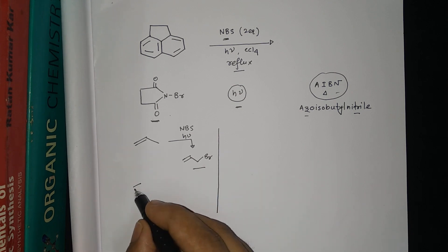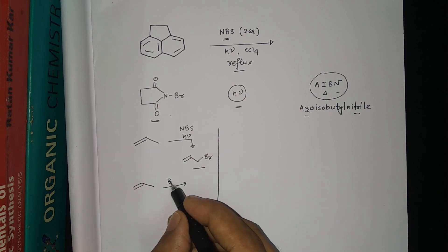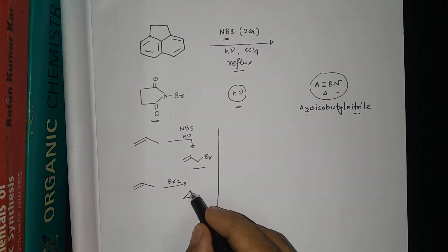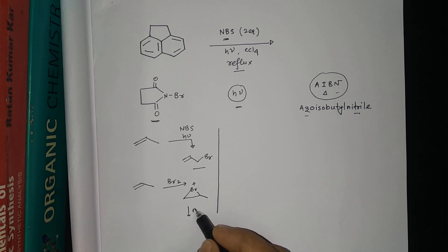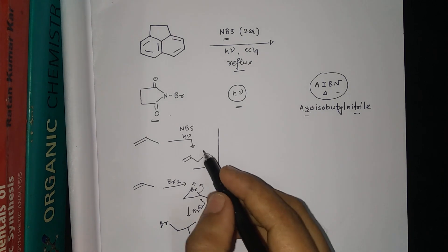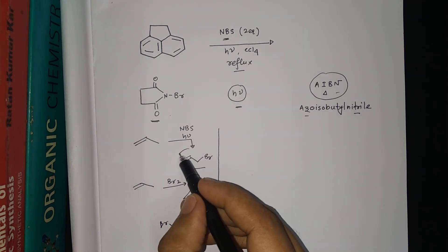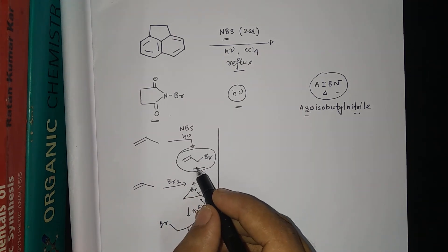If instead we use Br2 (bromine), what happens is it will form the bromonium ion, then a Br⁻ will react and add across the double bond — forming the vicinal dibromide product. So NBS specifically gives the allylic bromination product, not the addition product.